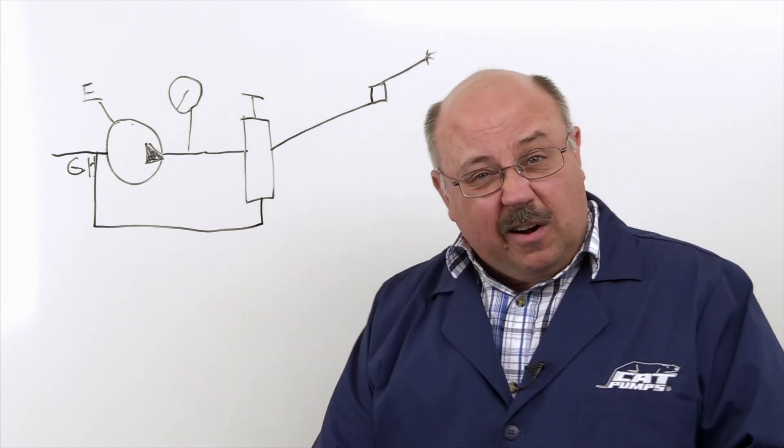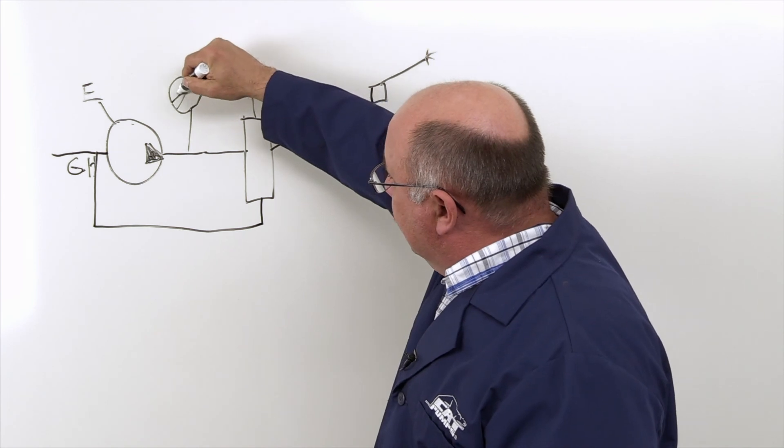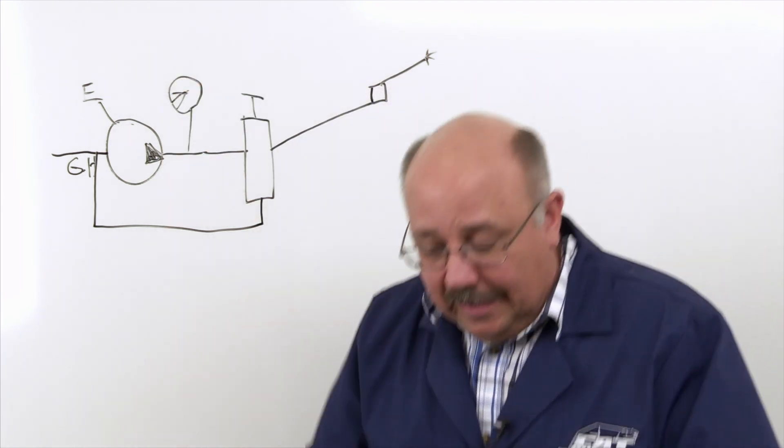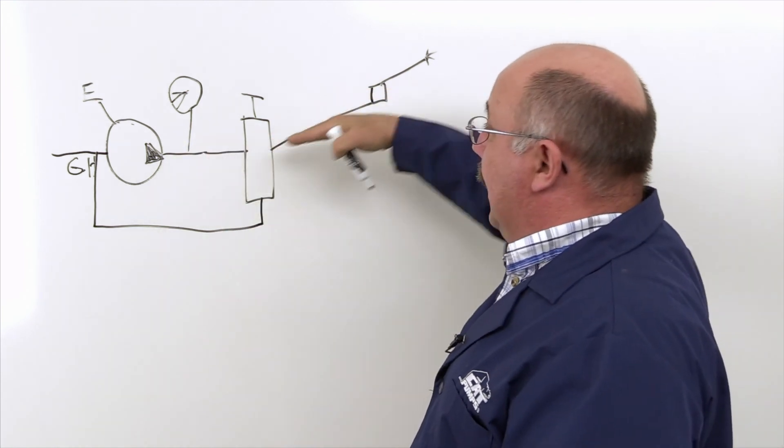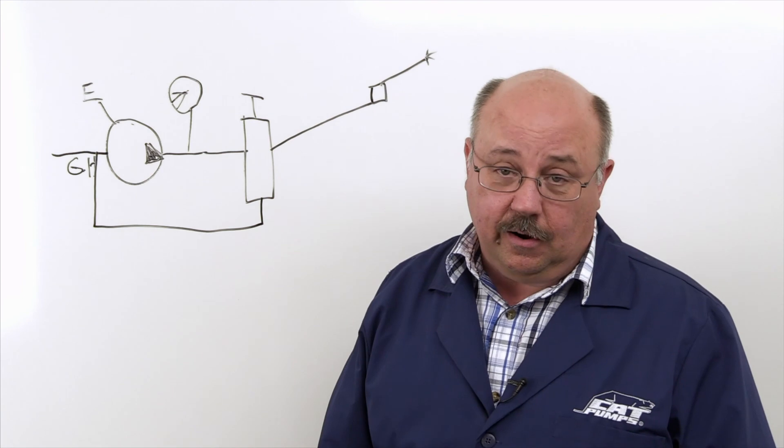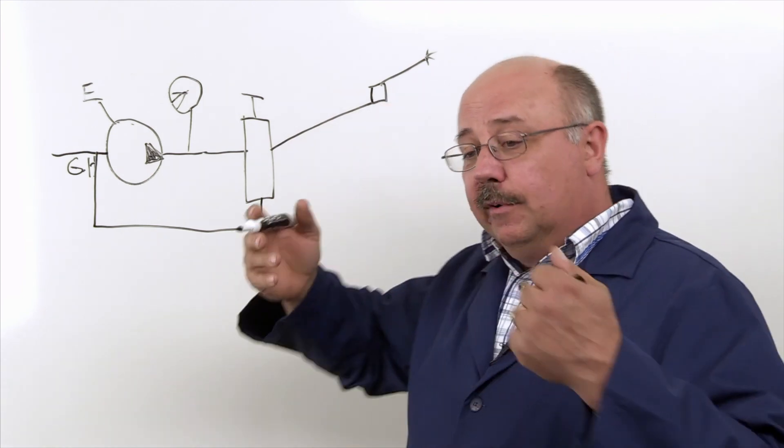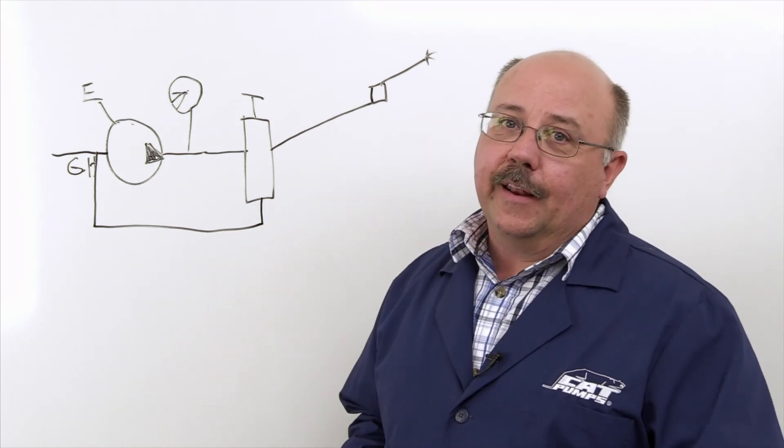So if that engine doesn't start on the first pull, after one pull, this gauge is going to come up a little bit, and then a little bit with the next pull, and pretty soon we haven't started the engine yet, and now I can't pull the rope anymore because there's too much pressure locked up in here. It's hard to start. So then you got to go back, open the trigger gun, relieve all the pressure down again, and then go back and try to start it again on the next pull.